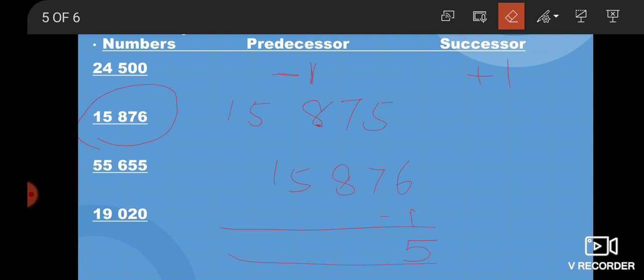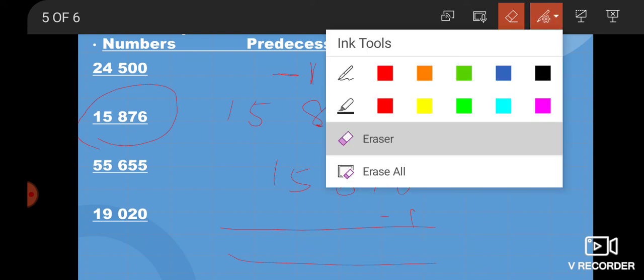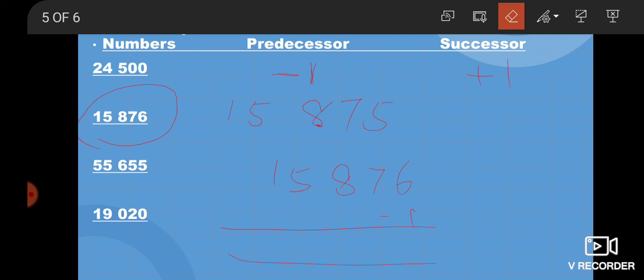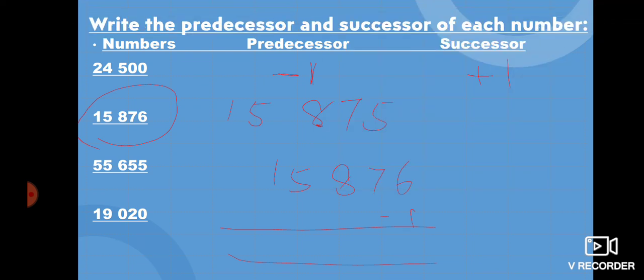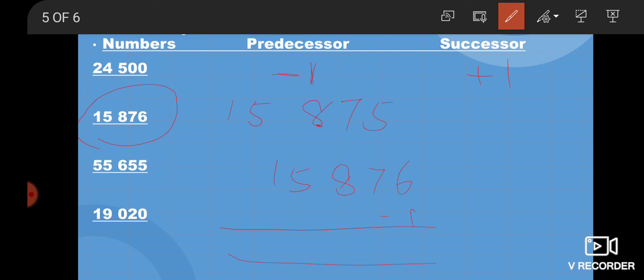After that you have to find out the successor. So what do you have to do, students? Tell me. Yes, very good, we have to add 1. Very good. 7 as it is because there is nothing to add in the previous remaining numbers. So the successor is 15,877. So the three parts you will solve.